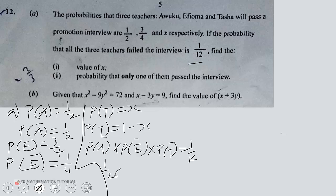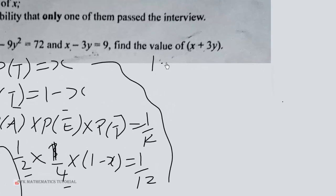So fixing the values, 1 over 2 times E prime is 1 over 4 times 1 minus x is equal to 1 over 12. This times this is 8. So let's multiply through by 8 to get 1 minus x is equal to 8 over 12.